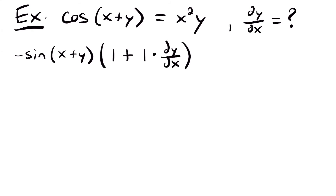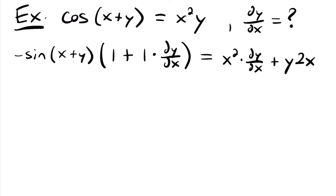The right side is the derivative of x squared times y, which requires a product rule. Anytime you see a function of x multiplied by a function of y, use the product rule. Our two functions are x squared and y. Following the product rule: first function x squared times the derivative of y, which gives dy/dx; plus second function y times the derivative of x squared, which is 2x.